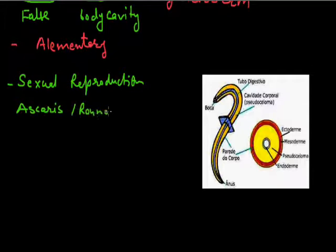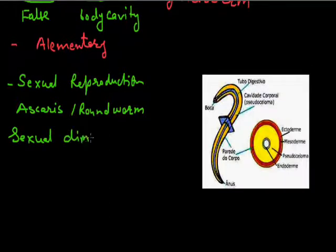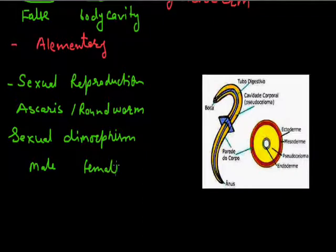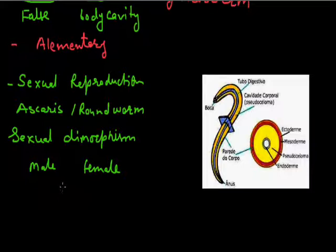These animals show sexual dimorphism, meaning animals are separated on the basis of their morphology — male bodies are different from female bodies. In the case of Ascaris, males are normally shorter in length and females are longer. So we call this sexual dimorphism because animals can be identified as male or female on the basis of their length.